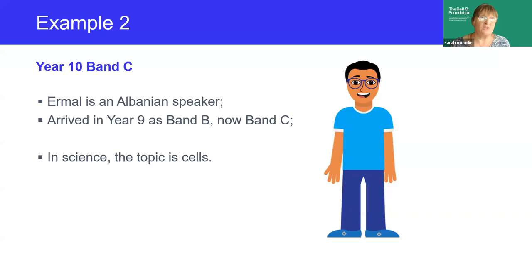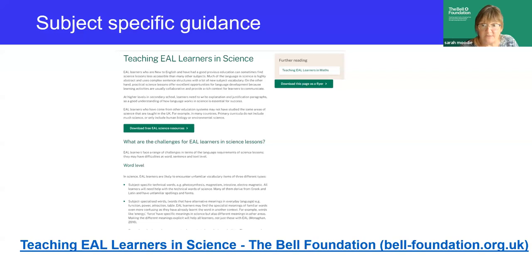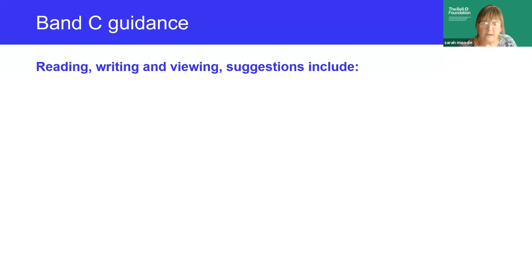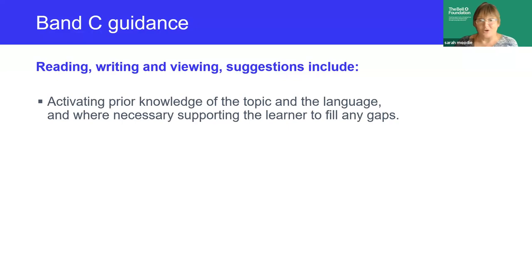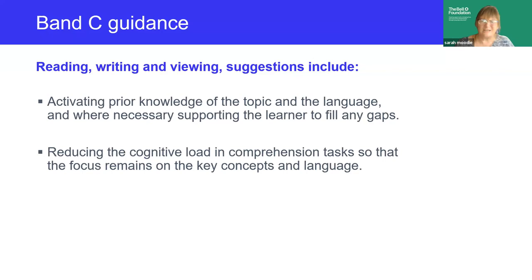The science teacher wants to prepare students for the longer five or six mark questions in science GCSE, which require students to write a short text while showcasing their scientific knowledge. He consults the subject-specific guidance on the Bell Foundation website and the strategies document. Reading the guidance for band C, he finds the following suggestions: the importance of exploring and activating prior knowledge, because EAL learners are never blank slates — particularly older secondary learners who will almost always already be in possession of considerable subject content knowledge. The science textbook, though good, is dense and daunting to someone with limited English, so reducing the cognitive load can help avoid overwhelm.